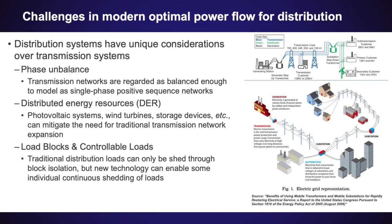And so transmission can be modeled by only including a single line in the model, where in reality there would be three. In distribution networks, however, phase imbalance can be significant due to the single-phase splits that you see at the end of the edges of the network, and therefore phase imbalance cannot be so easily neglected.